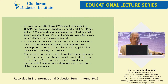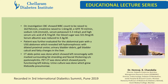Her white cell count was 16,000 or more. Creatinine was 1.6, eGFR was 70 mL per minute, sodium slightly low, potassium slightly high, uric acid high, blood sugar high, and serum albumin was a bit low at 3.3. She was further evaluated with ultrasound, which revealed left hydronephrosis with dilated proximal ureter, urinary bladder debris, gallbladder calculi, and fatty changes in the liver.